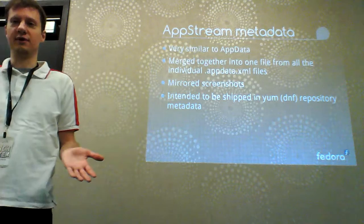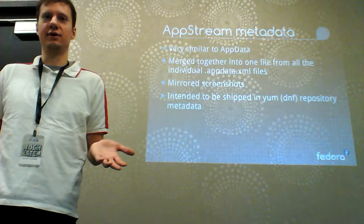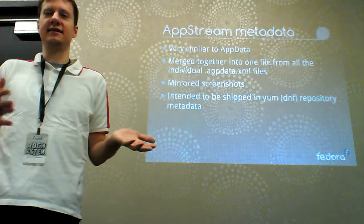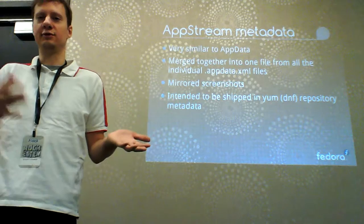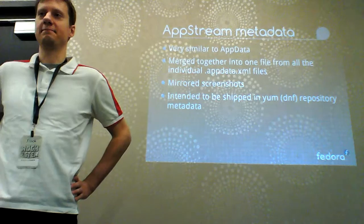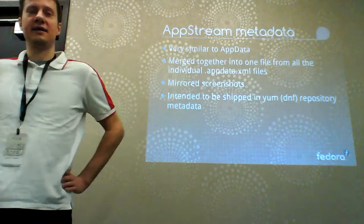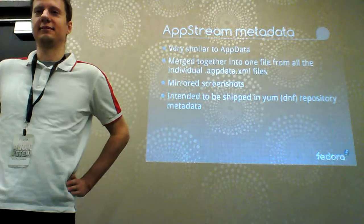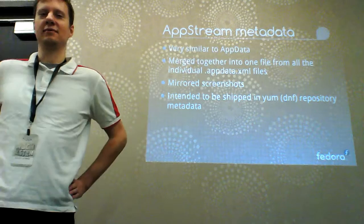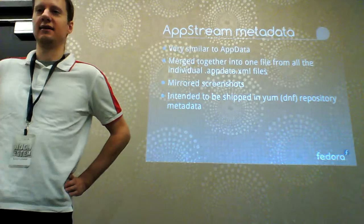During that process, the tool that extracts all the descriptions and screenshots also mirrors the screenshots and caches them on Fedora infrastructure. So if you have your own web server and upload a screenshot there, you can be sure that when someone accesses it through GNOME software, it uses the cached copy on the Fedora server — it won't DDoS your web server with bandwidth. The screenshot caching is also good for privacy, because third parties can't track what people are searching; only Fedora infrastructure has that information.